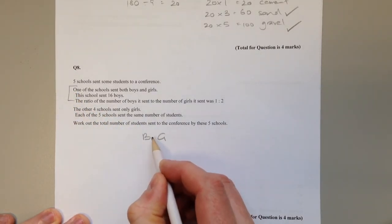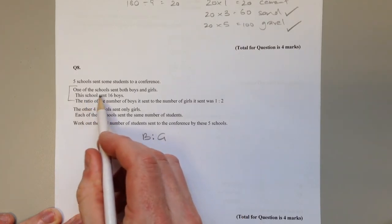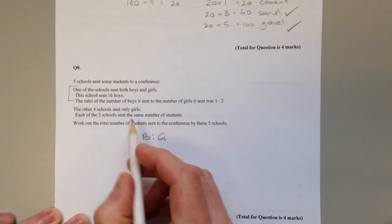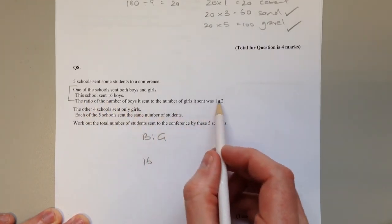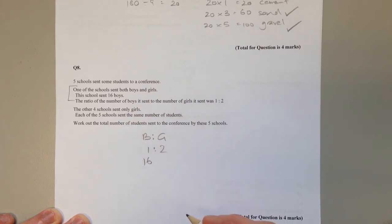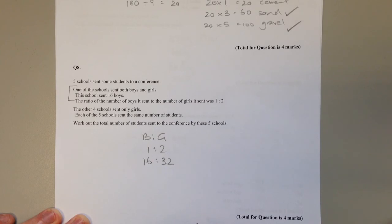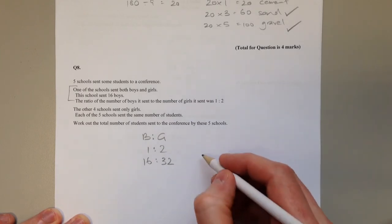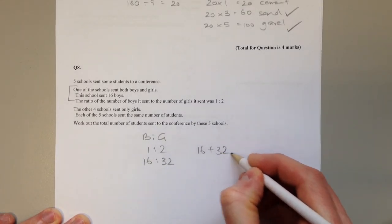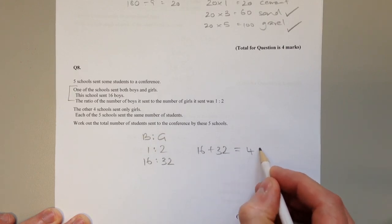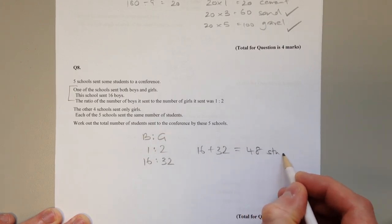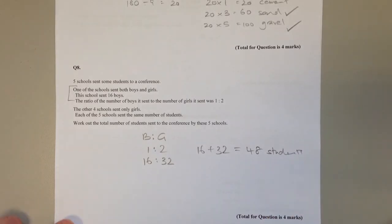They send boys and girls. The school sends 16 boys and the ratio of boys to girls is 1 to 2. So from that we can work out that the first school sent 32 girls. We'll need to know the total number of students. You'll see why in a moment. So the first school sent 48 students: 16 boys and 32 girls.